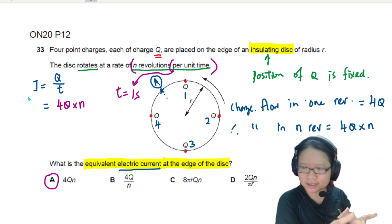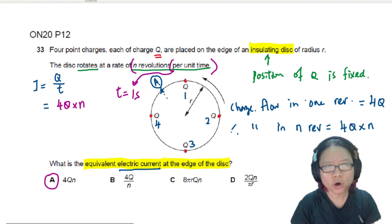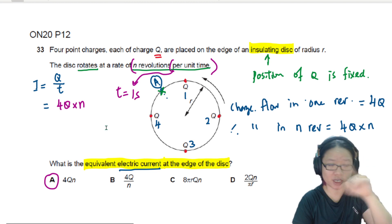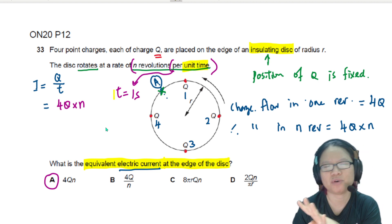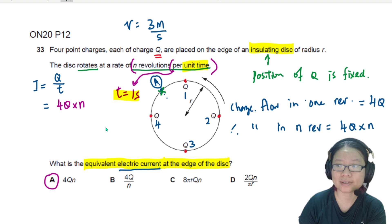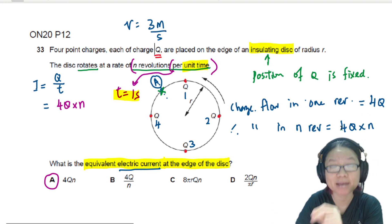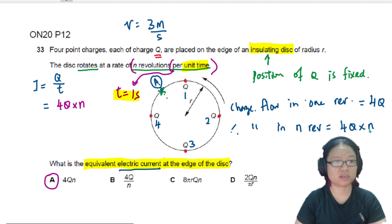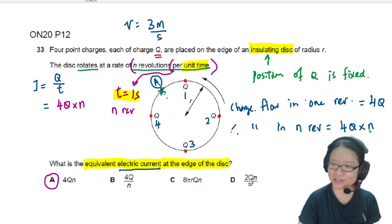It may look very complicated, but just think about your basics. I just need to know at a given time how much charge flows through a given point. Or if you remember the theory video, how many marbles flow through this green cross. I know in one cycle, one rotation, I get 4Q. And I know in a unit time — which is just a fancy way of saying 1 second — I rotate N times. Rotate 1 time, I get 4Q. Rotate N times, I get 4Q times N. Pretty easy. That's it for this example. I'll see you in the next one.